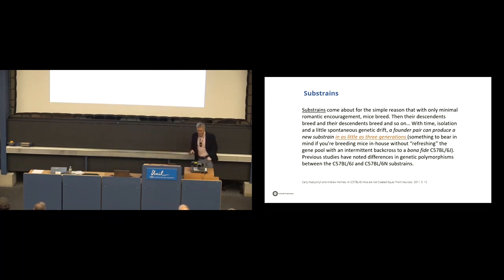So, in animals, substrains, you get very quickly a substrain. So, as this article shows, in as little as three generations, so it is really fast, you are already getting genetic drifting and a new substrain. So, you have to regularly backcross to a bona fide black six line to maintain your original characteristics.